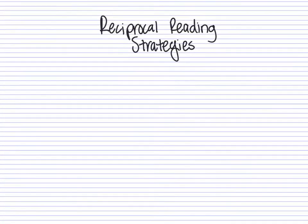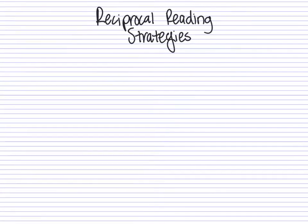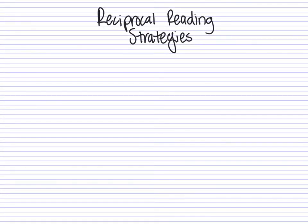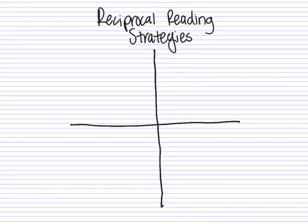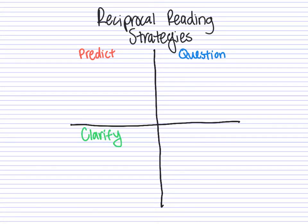I'm going to zoom out a little bit, pretending that this is my notebook. I am going to draw a line right down the center and right down the middle, so it looks like that — broken up into four sections. I'm going to label each section: the top section is Predict, the right is Question, below that is Clarify, and lastly, Summarize.